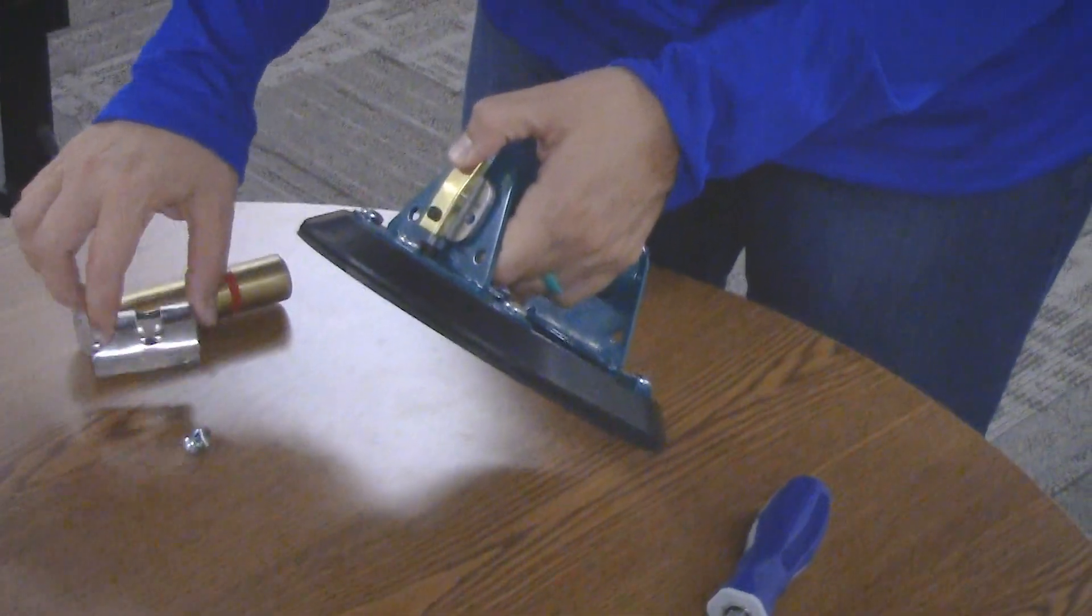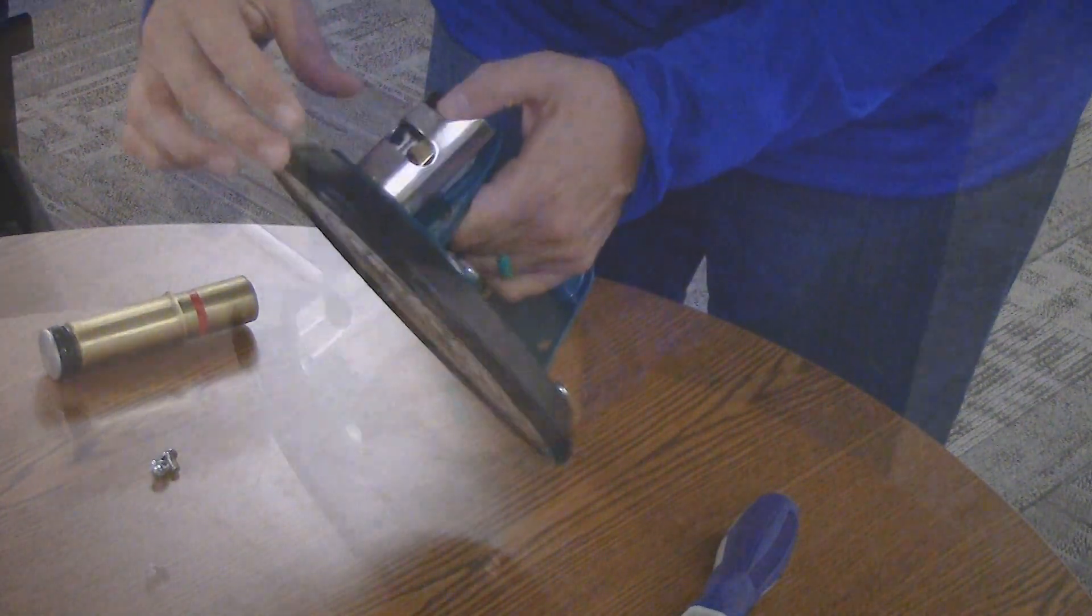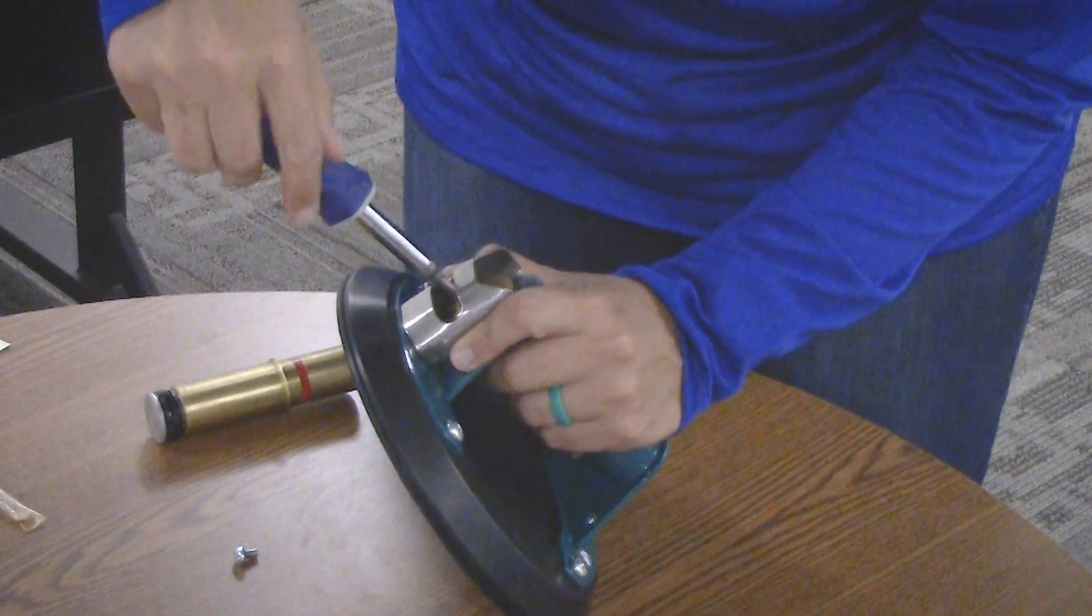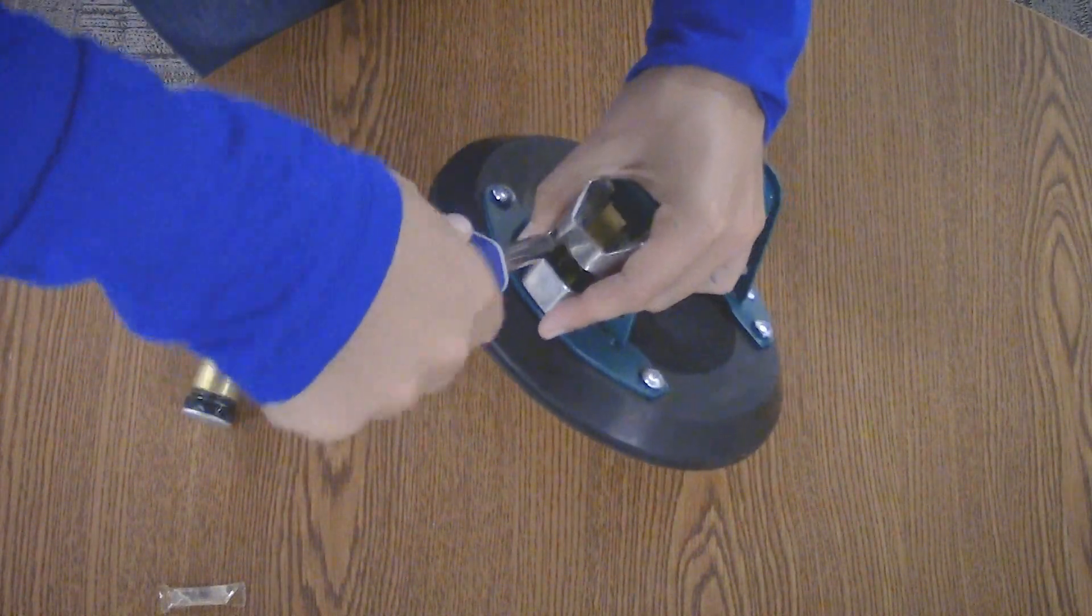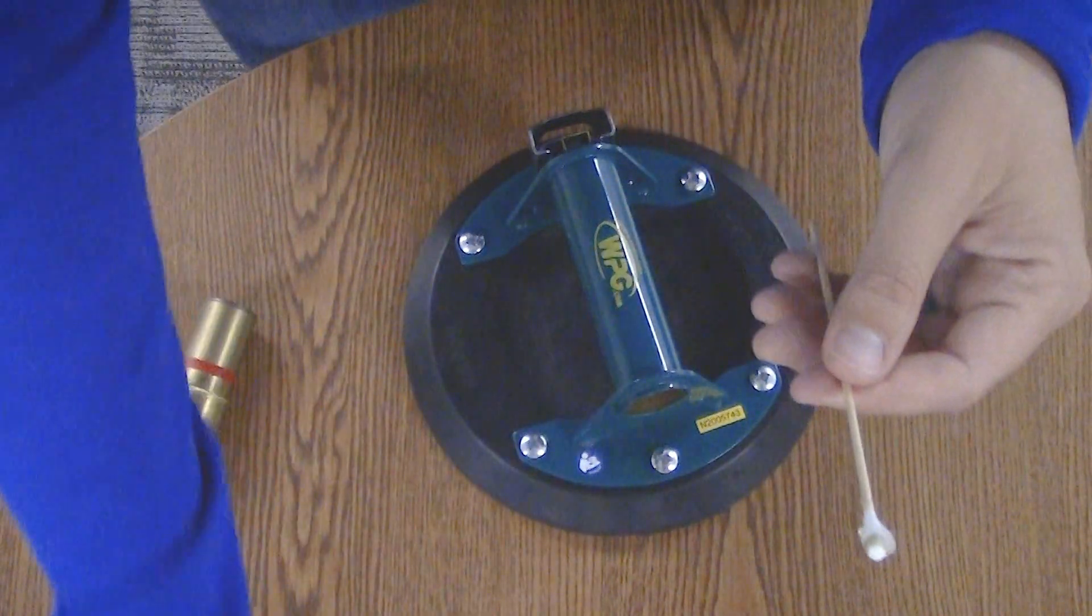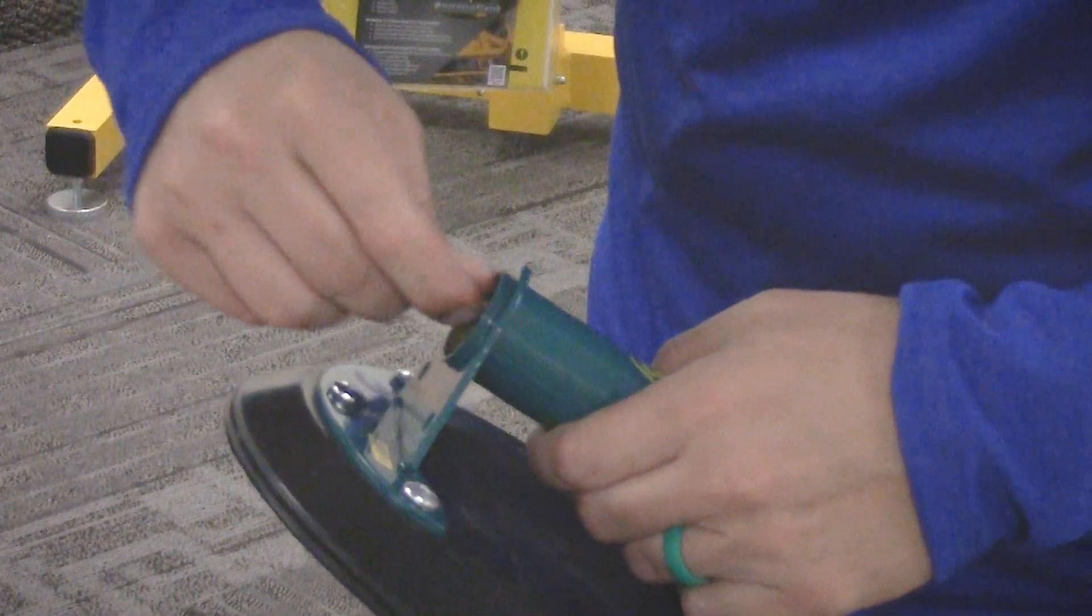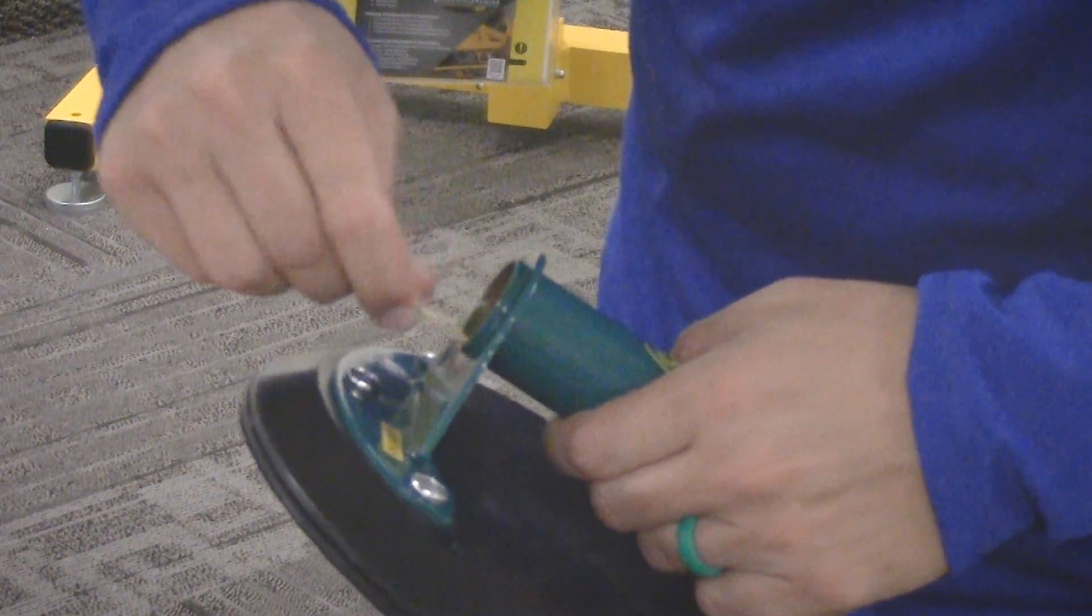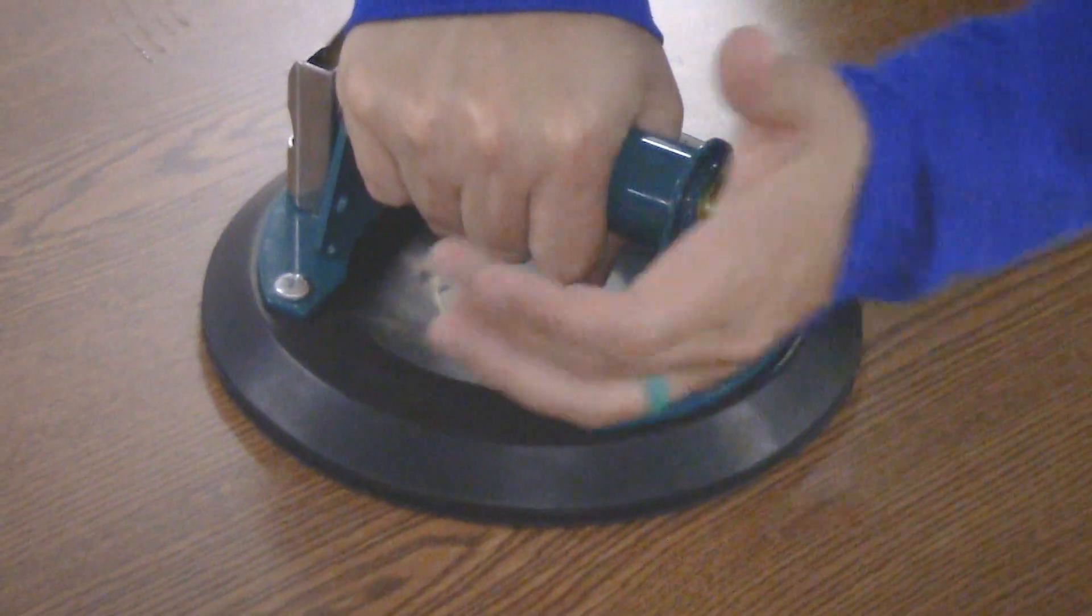Next, make sure to slide the valve guard in place and reinstall the two screws. Re-lubricate the inside of the handle the same way explained earlier and reinstall the plunger. Once reassembled, conduct the two-hour leak test.